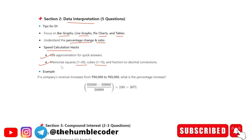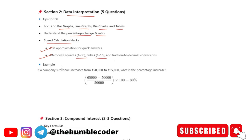Next is one of the example. If a company's revenue increases from 50,000 to 65,000 what is the percentage increase? So simple is you have to subtract 65,000 minus 50,000 divided by 50,000 multiplied by 100 will give you the percentage increase.